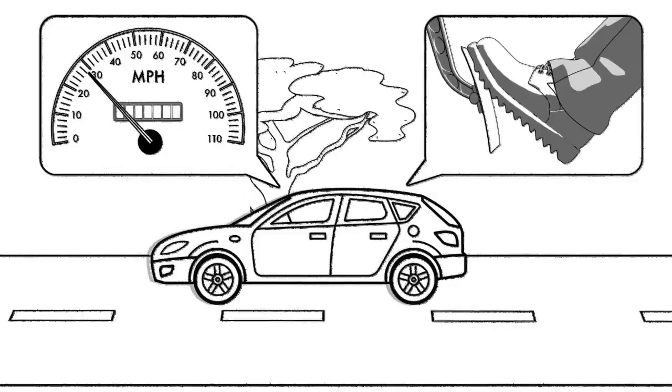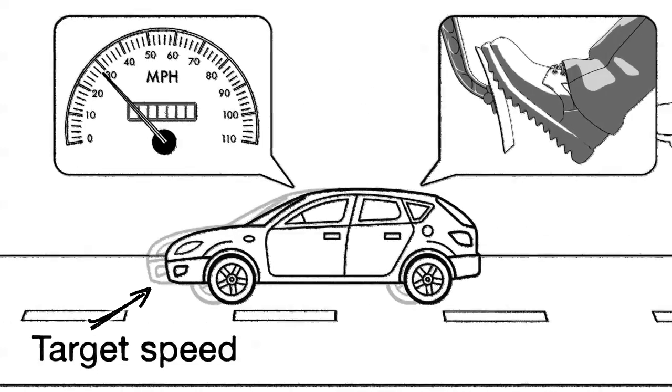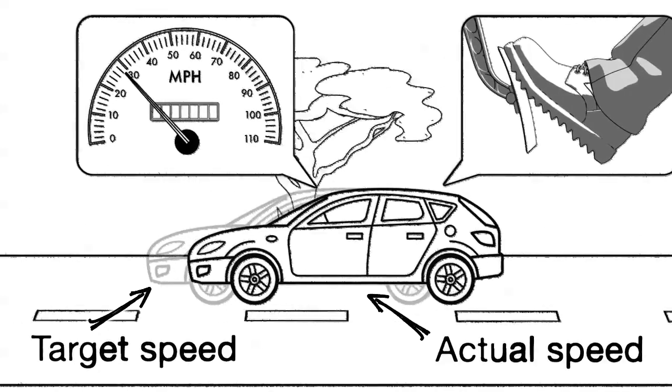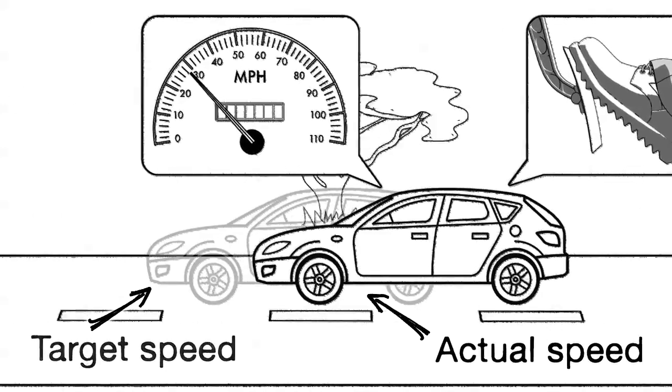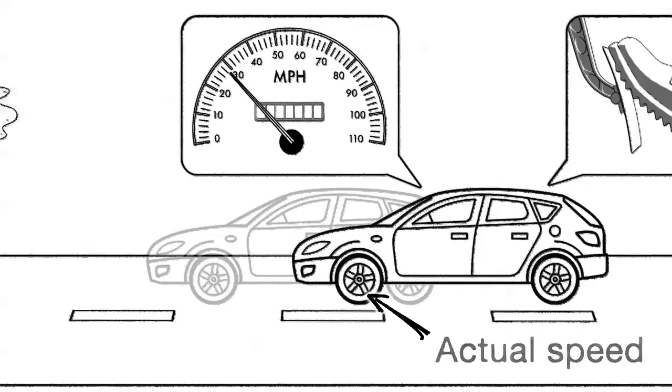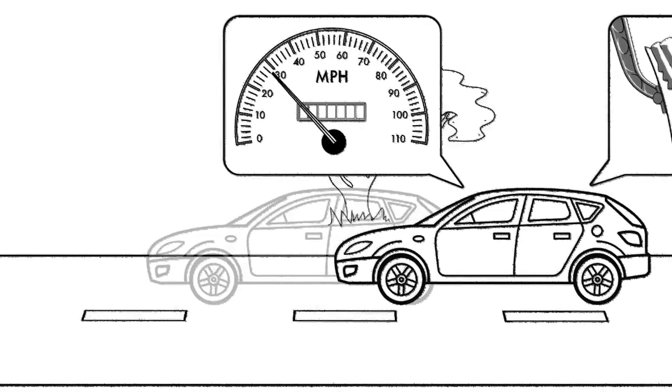However if we only have a small fixed error between target speed and actual speed the proportional element is too small to be effective and because there is no change in speed the derivative contribution is zero. So this small error stays uncorrected.